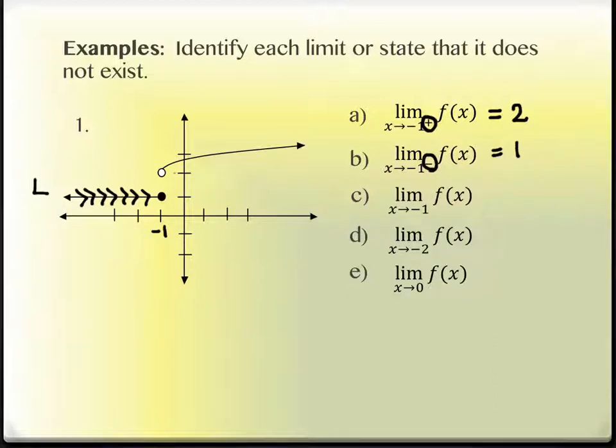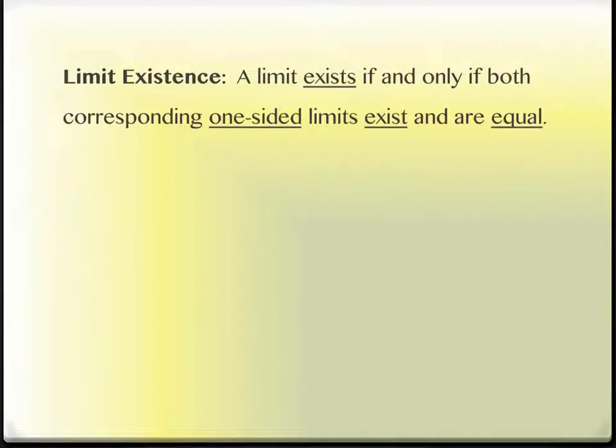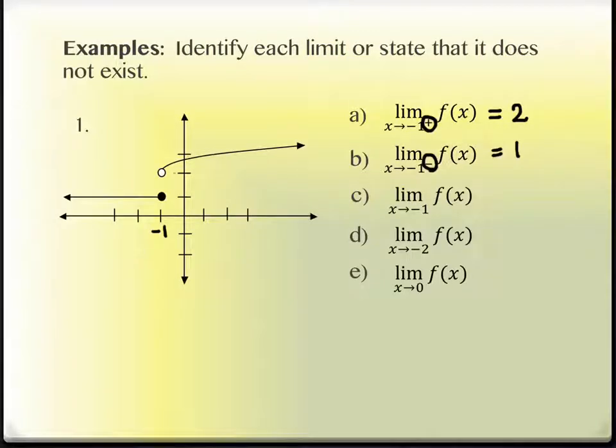So what happens next is we compare these. Over here it says the limit exists if the one-sided limits both exist, which ours do. One of them is a 2, and one of them is a 1. But the other thing is that it says they have to be equal, the same, and what happens on ours? They're not. So what does that mean? It means that the limit does not exist. There is no limit. There's a jump in the graph.